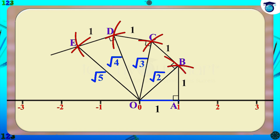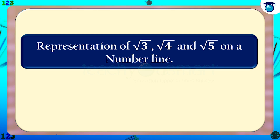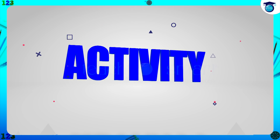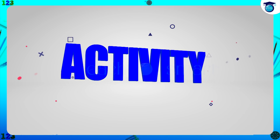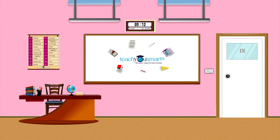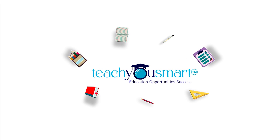Using the square root spiral we can represent root 2, root 3, root 4, root 5, etc. on a number line. Let's have a quick recap: today we learned the representation of root 3, root 4, and root 5 on a number line, and discussed the square root spiral. Before winding up, let's check your understanding with an activity: represent root 7 on a number line. See you all in the next class!